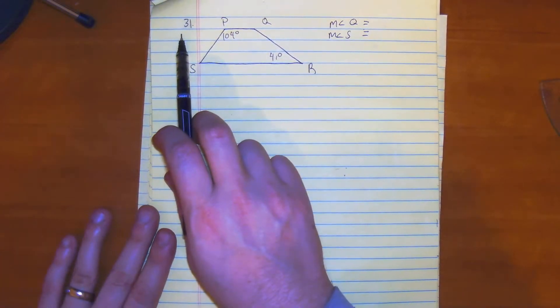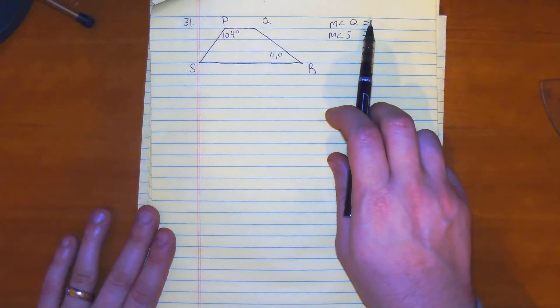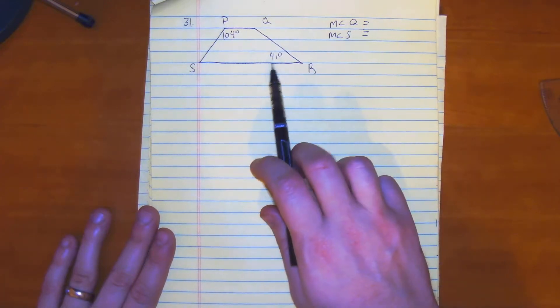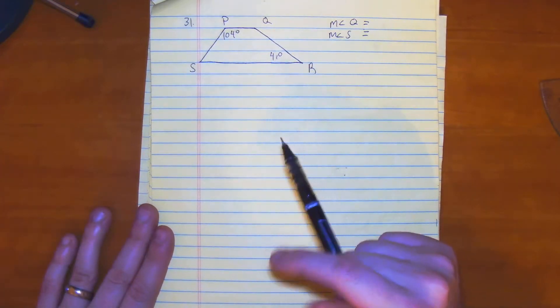We're looking at number 31. Number 31 wants us to find the measure of angle Q and S. We're given a trapezoid.